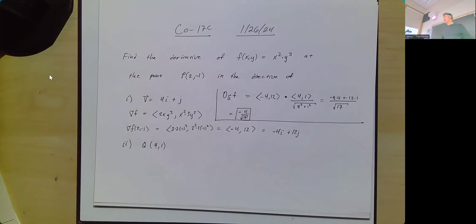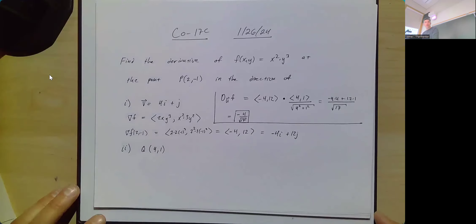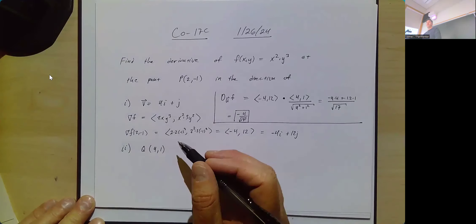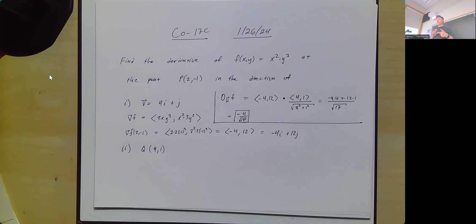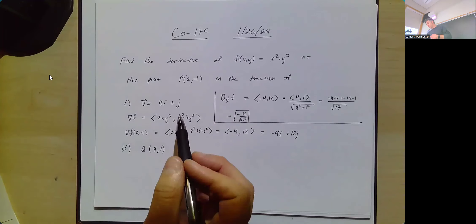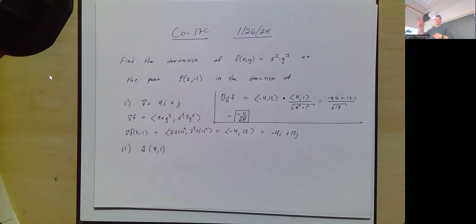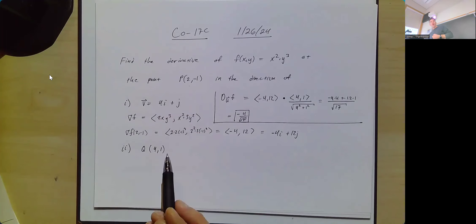The next part is different. People often confuse these two kinds of questions. The first one gave you the direction of the vector we're traveling. The second one gives you the point you're traveling towards. But that doesn't mean you're traveling in the direction (4, 1) unless you were starting at the origin.